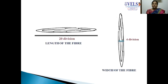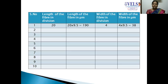Here, I have focused on the length of the phloem fibers. For example, if the length of a fiber is showing 20 divisions and the width of the same fiber is showing 4 divisions, those values are in divisions and must be converted into micrometers. To do this, we multiply by the calibration factor calculated in low power. We have calculated the calibration factor as 9.5.